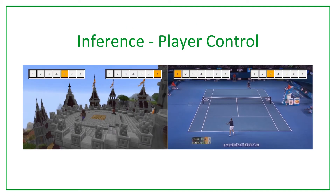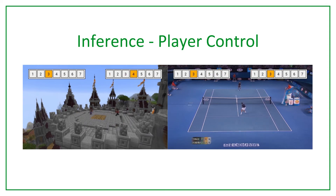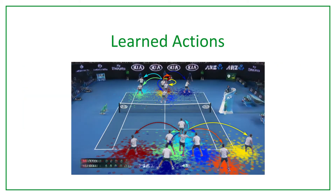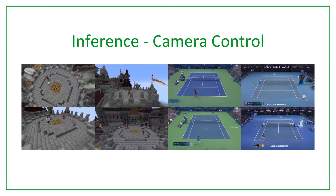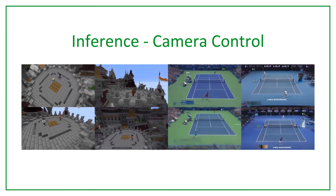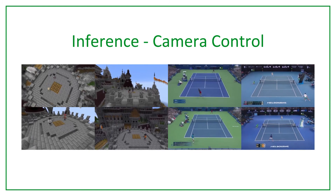We now show some sequences interactively produced by a user with our framework. At each step, the user provides a discrete action for each player, highlighted in the top corners. Our framework can generate long video sequences that exceed 3 minutes in duration. We find that our method can learn a wide set of actions describing the principal movement directions of the players, which gives the user granular control over the generation process. During the rendering step, the user can take control of the camera and specify an arbitrary camera pose from which to render the video sequence.